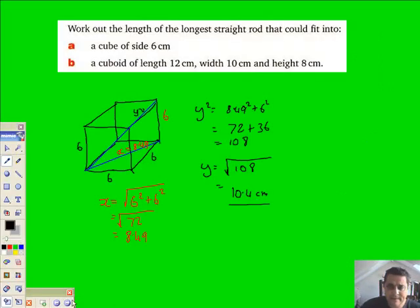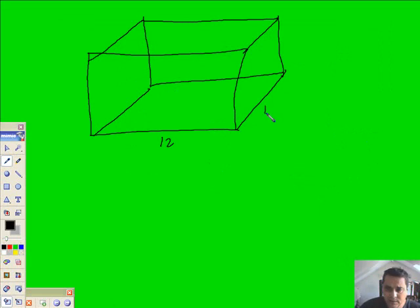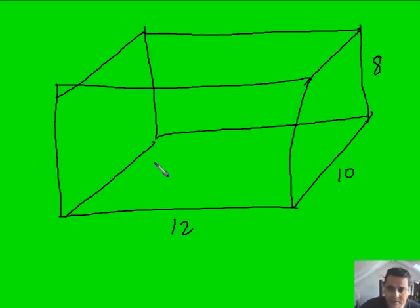So, 12, get my dimensions. 10 along, or 10 into the screen and 8 at the back. So, all these vertical ones are 8. These ones here are 10s and the big ones there are 12. So, that's all I need.